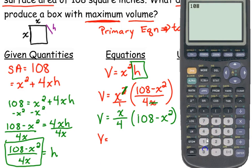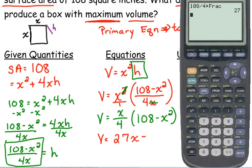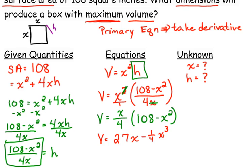So let's see what 108 over 4 reduces to. Oh, it is divisible by 4. So that's nice. So we have 27x minus, and I'm going to write this as 1 fourth x cubed, just so you don't look at that as a quotient rule, because it's not.